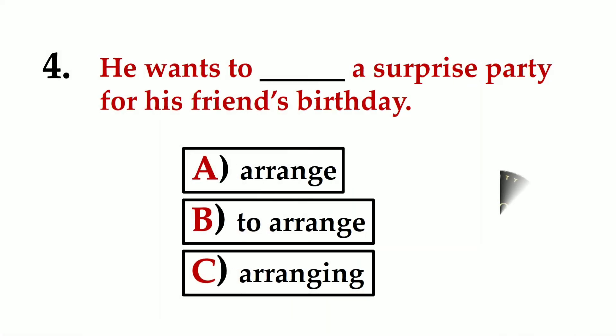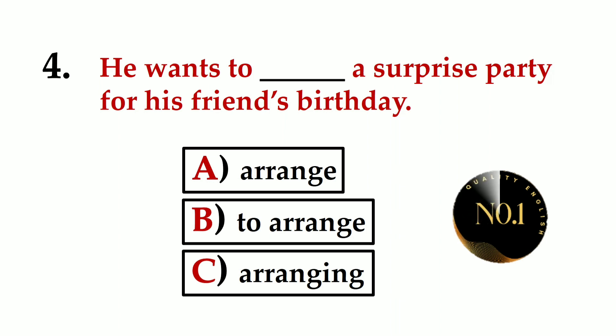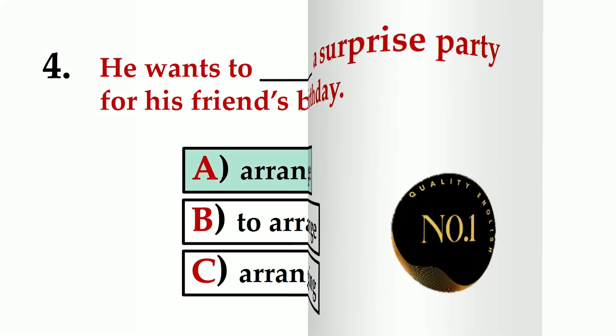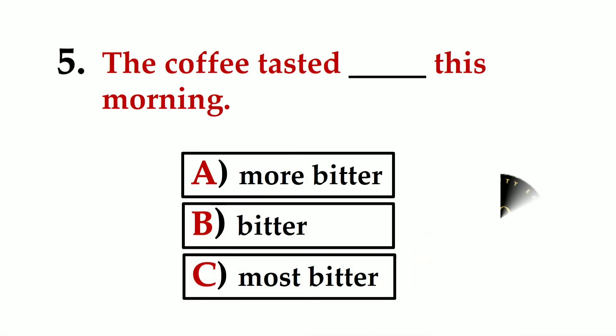Number four: He wants to ___ a surprise party for his friend's birthday. A) arrange, B) to arrange, C) arranging. The correct option is A) arrange.